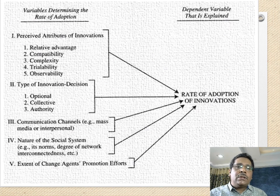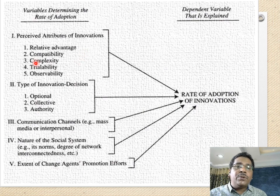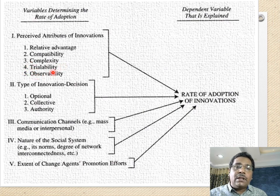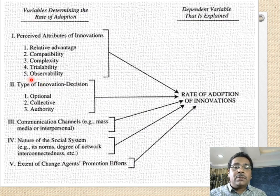From Everett Rogers' book, these are the five factors: relative advantage — whether the innovation is better than what we've been using; compatibility — how compatible it is with existing practices; complexity — whether it's complex or simple; trialability — whether we can trial it; and observability — whether the positive impact and relative advantages are visible empirically.